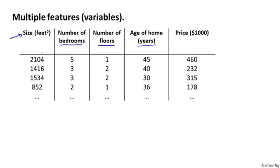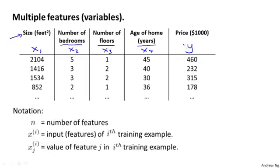To introduce a little bit of notation, I'm going to use the variables x subscript 1, x subscript 2, and so on to denote my, in this case, four features, and I'm going to continue to use y to denote the output variable price that we're trying to predict. Let's introduce a little bit more notation. Now that we have four features, I'm going to use lowercase n to denote the number of features. So in this example, we have n equals four.